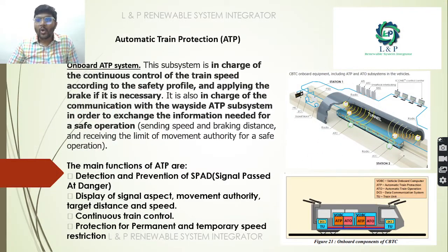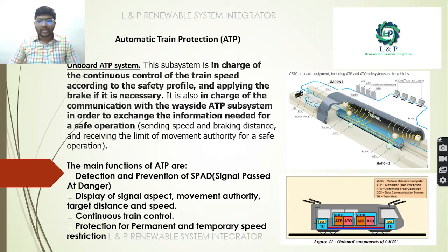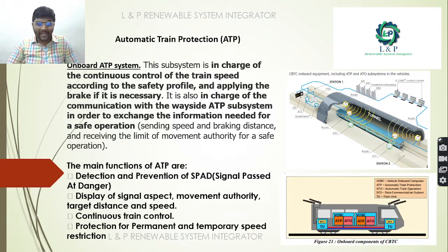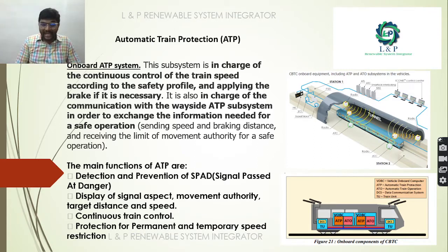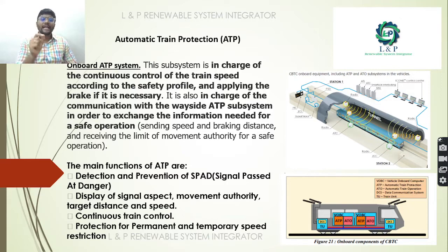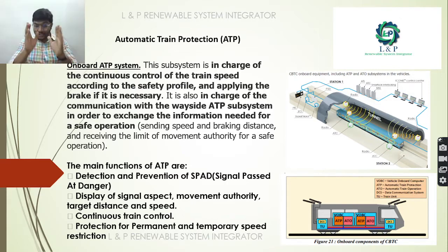The on-board ATP (automatic train protection) is in charge of the continuous control of train speed according to the safety profile. Its main functions include: detection and prevention of signal passed at danger (SPAD), display of signal aspect such as movement authority and target distance, continuous train control, and protection for both permanent and temporary speed restrictions.